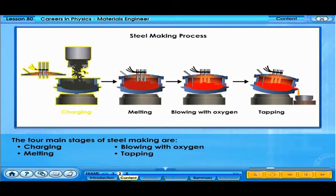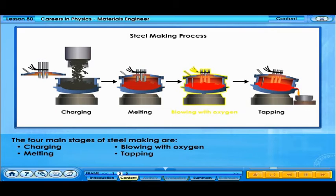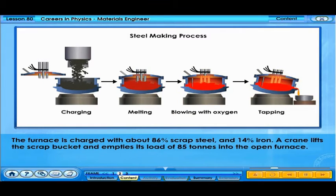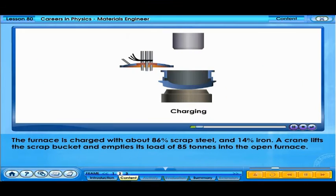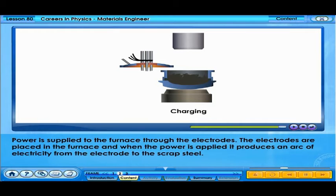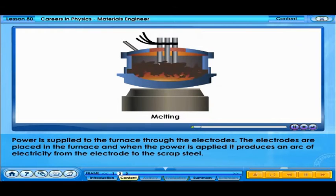The four main stages of steel-making are: Charging, Melting, Blowing with oxygen, and Tapping. The furnace is charged with about 86% scrap steel and 14% iron. A crane lifts the scrap bucket and empties its load of 85 tons into the open furnace.